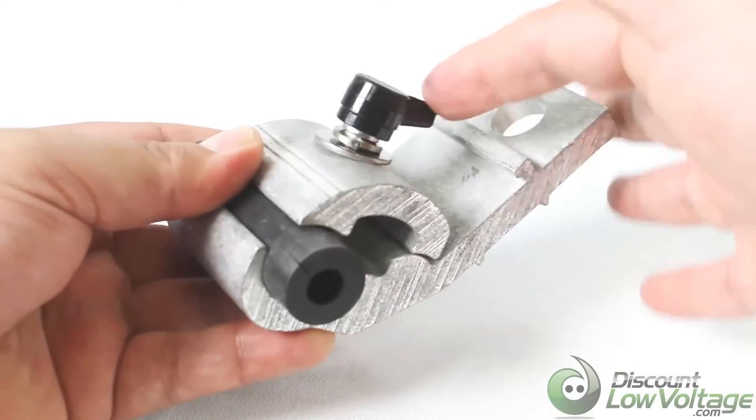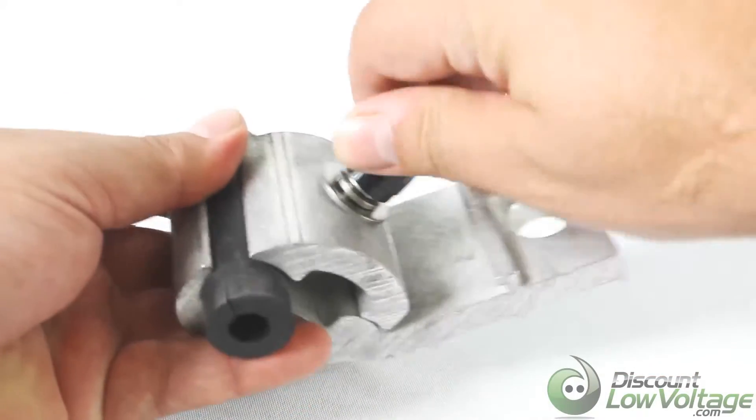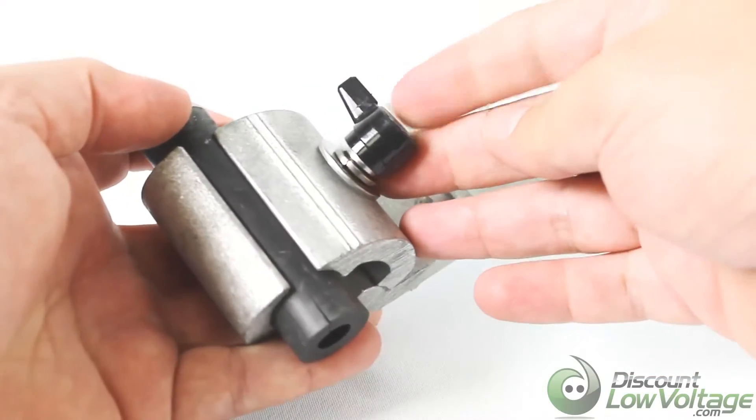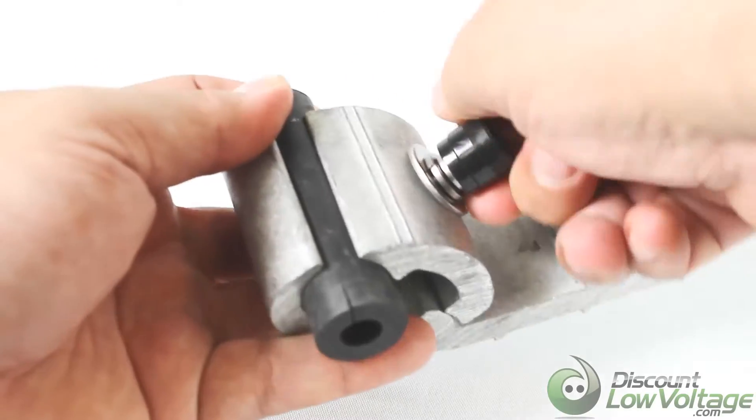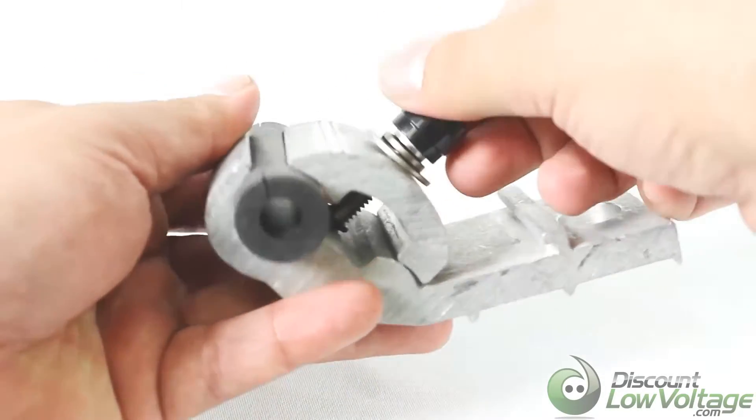As you can tell, there's a nut up here on top. This is how you would tighten it. There is also a lock washer and another washer, so once it's tightened down properly it should stay in there pretty good.